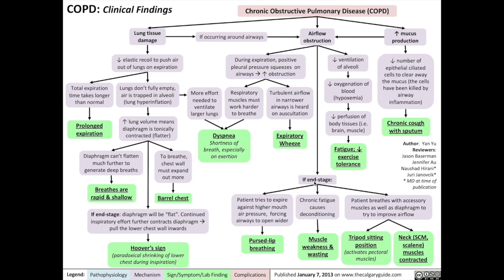Finally, if the COPD patient is end-stage, airflow obstruction causes several classic signs. First, COPD patients will try to compensate for airflow obstruction by increasing the air pressure inside their mouths, which forces the airways to open wider — through a method called pursed lip breathing. Secondly, chronic fatigue associated with COPD will cause deconditioning, resulting in muscle weakness and muscle wasting. Finally, the patient will breathe with accessory muscles as well as the diaphragm, sitting in what's called a tripod position to activate their pec muscles for greater inspiratory effort, with neck muscles such as the sternocleidomastoid or scalene muscles contracted to further increase ventilation effort.